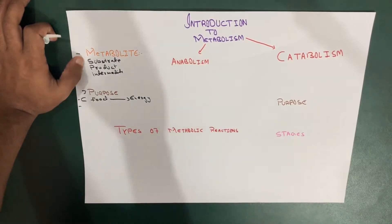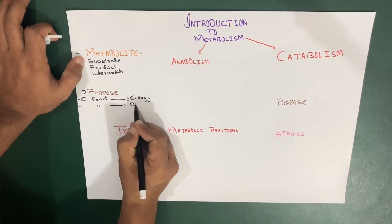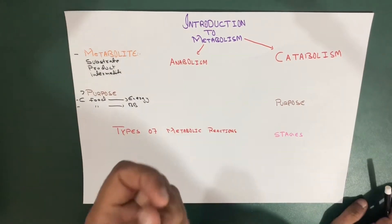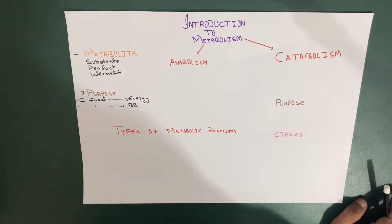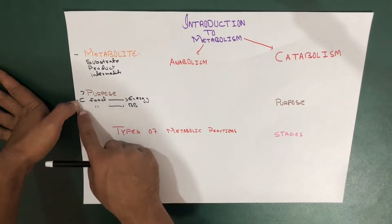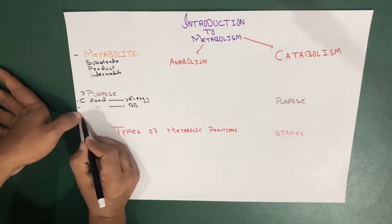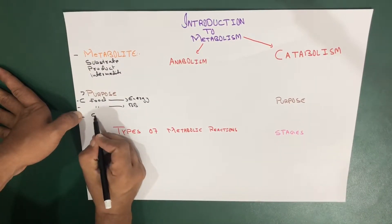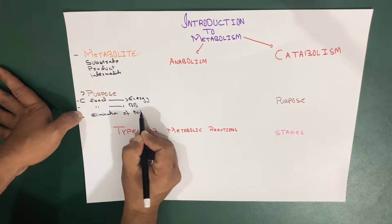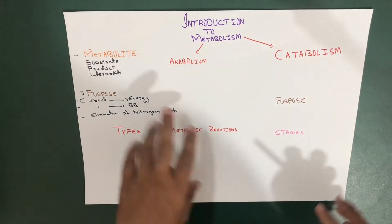Number two, we have the food conversion to building blocks — food converts into building blocks. We're eating food and we need building blocks: amino acids, monosaccharides — all those are the building blocks. We break down protein and it gives us amino acids, those are the building blocks. The last purpose of metabolism is the elimination of nitrogenous waste. So these are the three main purposes of metabolism.